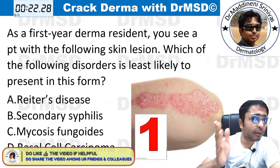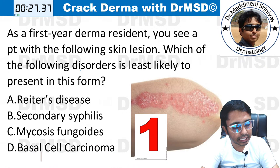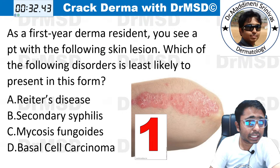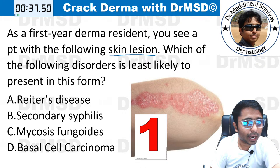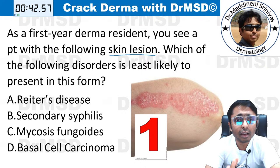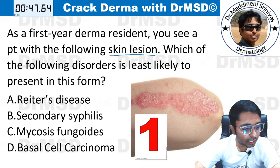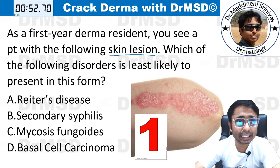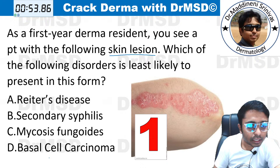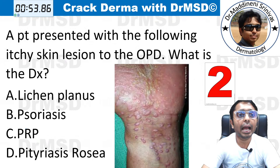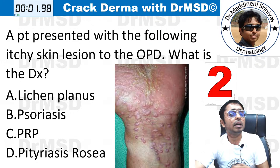Your time has already started. This is question number one. As a first year derma resident, you see a patient with the following skin lesion. Which of the following disorders is least likely to present in this fashion? I got Ankit Srivastava and Pragna Chaudhary giving option D, and the timer is up. You have marked it right — the answer is basal cell carcinoma. Very good.